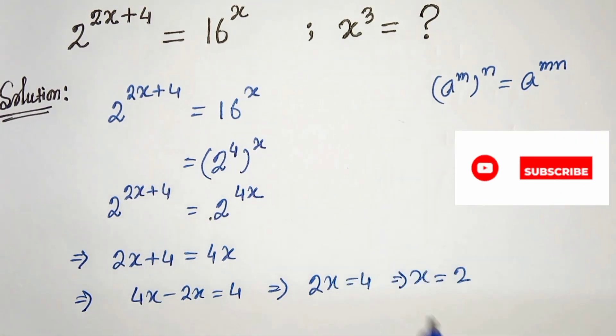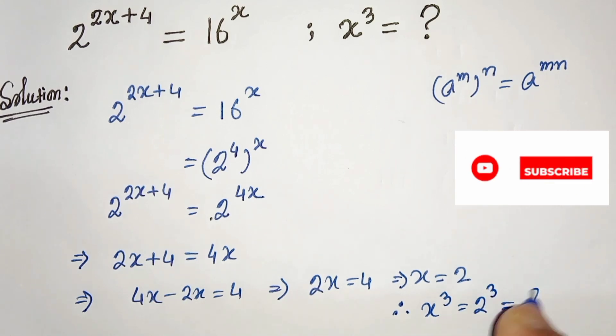Now we have to find x cubed. Therefore our x cubed is 2 cubed that is 8. This is our solution. Thanks for watching.